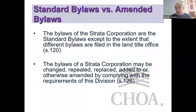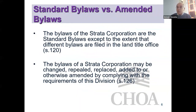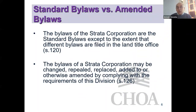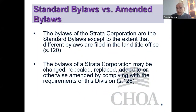The bylaws of every strata corporation in British Columbia — including duplexes all the way up to 1,200 to 1,300 unit communities and bare land stratas — are the standard bylaws in the Strata Property Act, except to the extent that your strata has filed other bylaws in the land title office. Examples include how you conduct council meetings, the order of your agenda, the number of pets allowed, or the obligation to repair and maintain something.